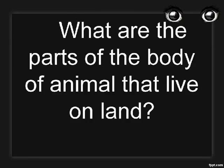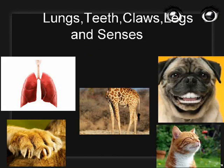What are the parts of the body of animals that live on land? Lungs, teeth, claws, legs, and senses.